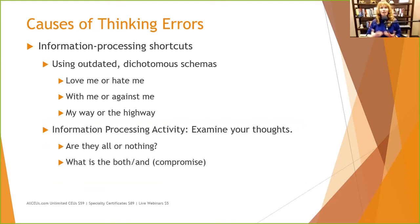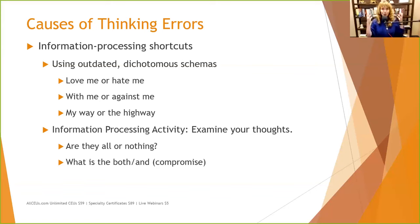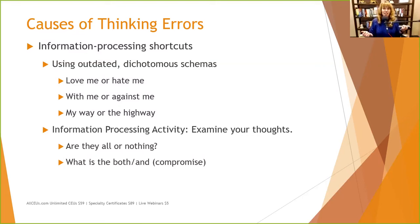What causes these thinking errors? We need to think about that before we can help people address their thoughts. Information processing shortcuts: as we grow up, we learn things, but what we learned as children — because we were cognitively a child — tends to be dichotomous, all or nothing. Things learned back then may not have been challenged. If a parent said 'you're a bad girl,' a child takes that in a completely all-or-nothing way: 'I am a bad girl, I'm not okay, I'm never okay.' These outdated dichotomous schemas can really trip somebody up.